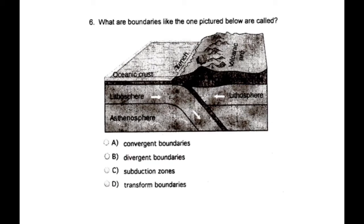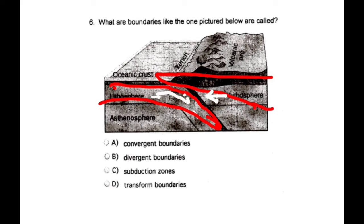Number six, what are boundaries like the one pictured below called? Okay, so here we have a plate and this one's going downward, and here we have a plate and this one's going over the top. And they are coming, if you look at these arrows right here, they are coming up to the other plate, they're pushing together. They're running into each other. We call that type of boundary a convergent boundary.